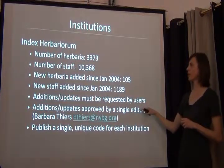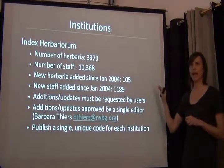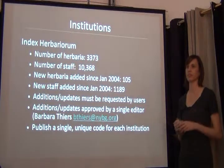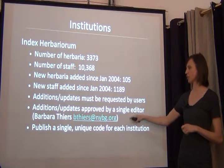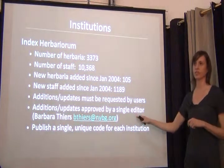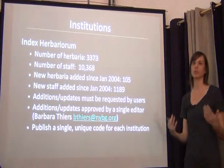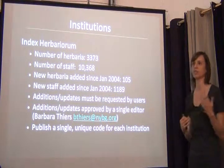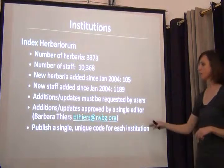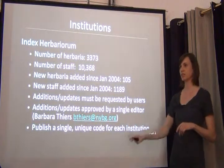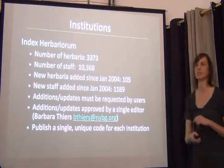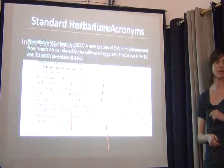What's good about Index Herbariorum is that it's a published, edited version standard. Barba Tears at the New York Botanical Garden is the only one who creates and edits all of these records so that we can ensure that each value is maintained unique. If your institution is out of date or incorrect, please email her and get your institution updated.